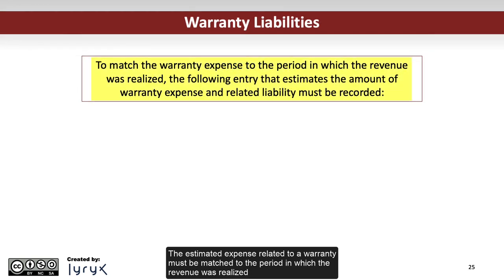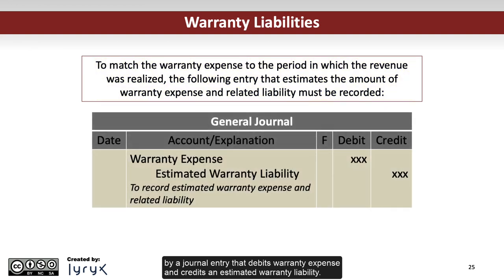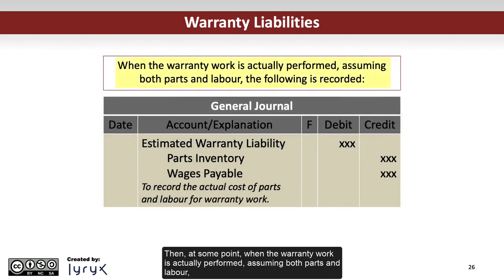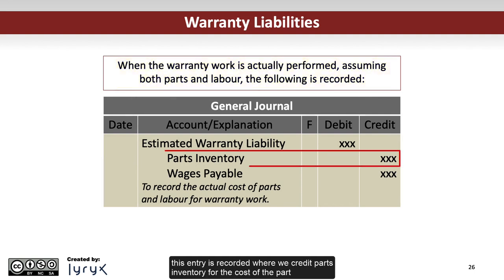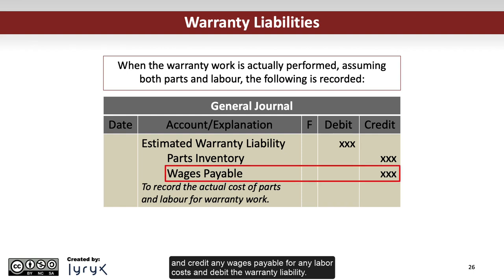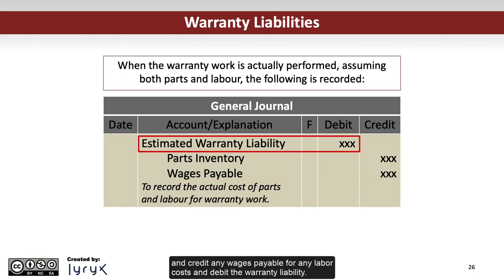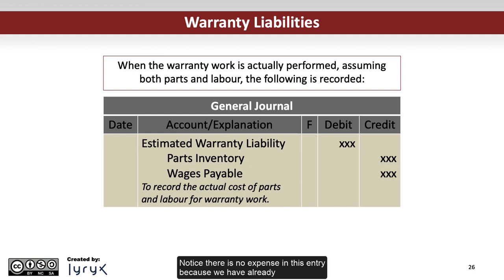The estimated expense related to a warranty must be matched to the period in which the revenue was realized, via a journal entry that debits warranty expense and credits an estimated warranty liability. Then, at some point when the warranty work is actually performed, assuming both parts and labor, this entry is recorded where we credit parts inventory for the cost of the part, credit wages payable for any labor cost, and debit the warranty liability. Notice there is no expense in this entry because we have already expensed an estimated warranty cost when the product was sold.